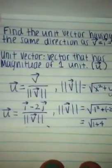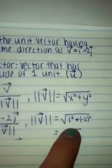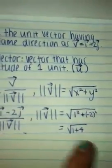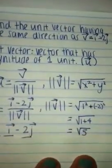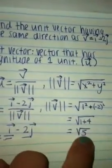So the magnitude is going to be found by doing the square root of 1 squared plus negative 2 squared. That equals the square root of 5 because you add 4 plus 1, that equals 5.